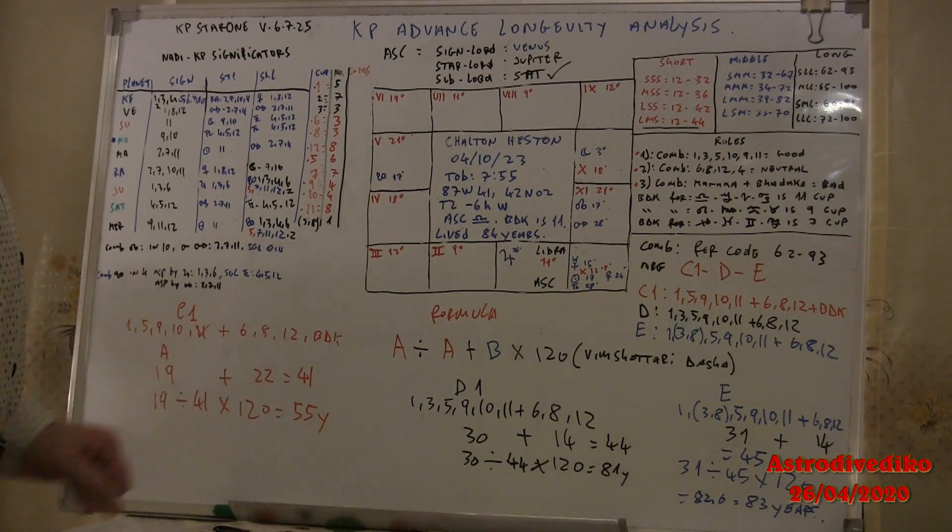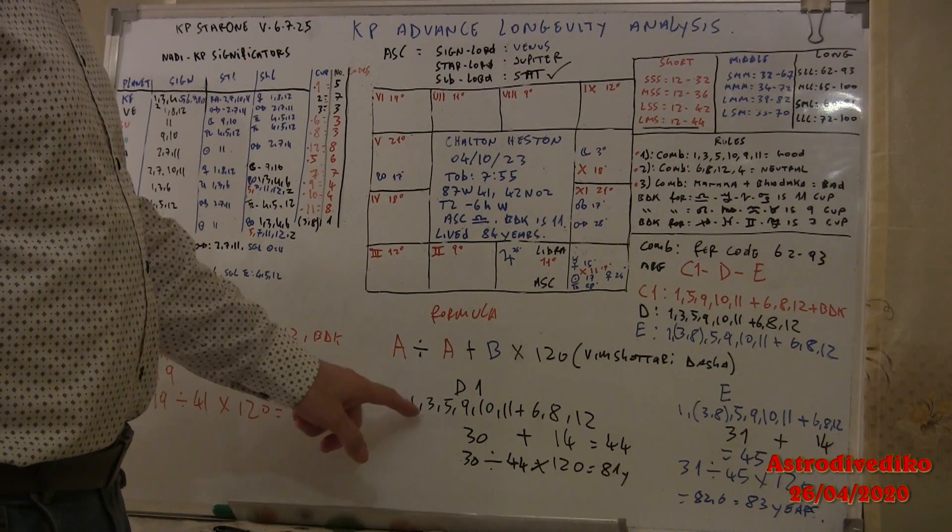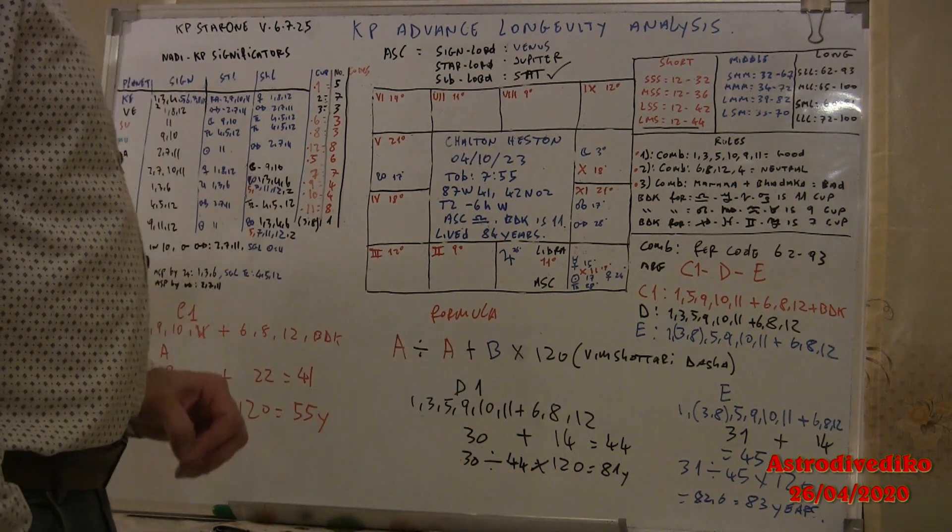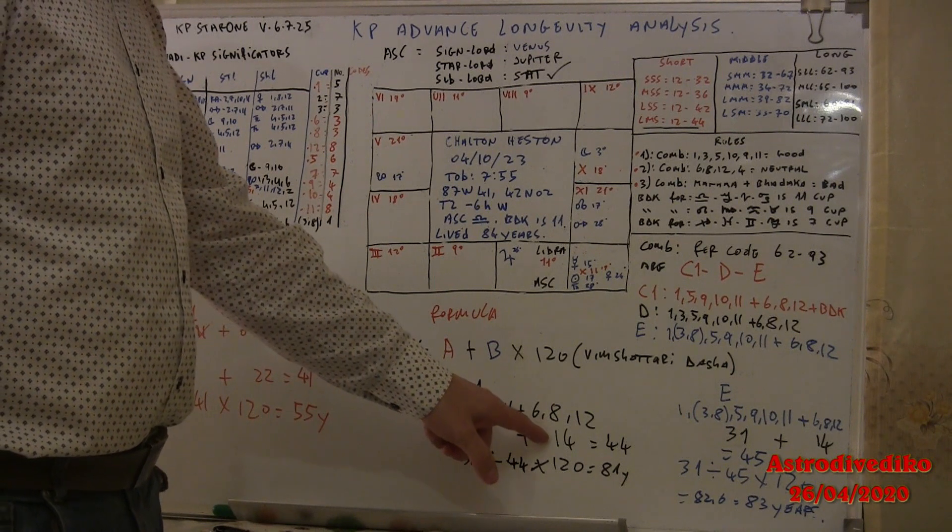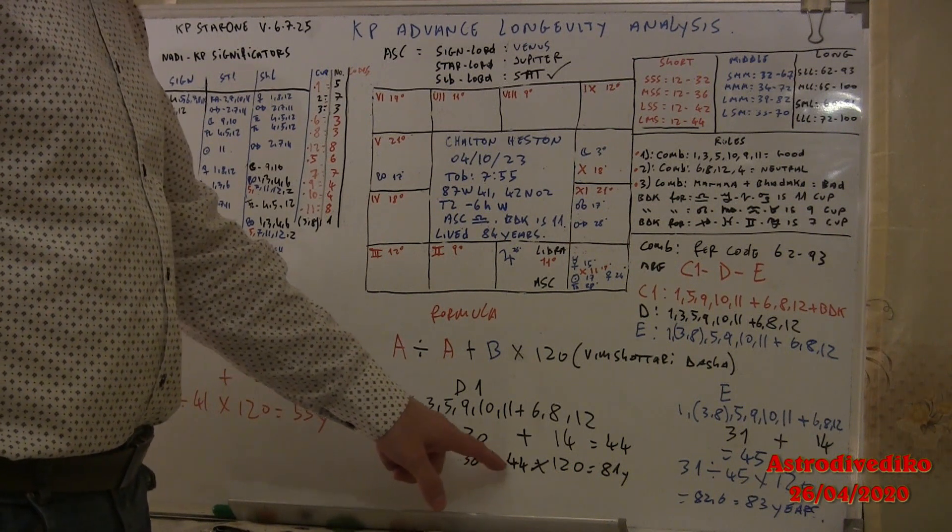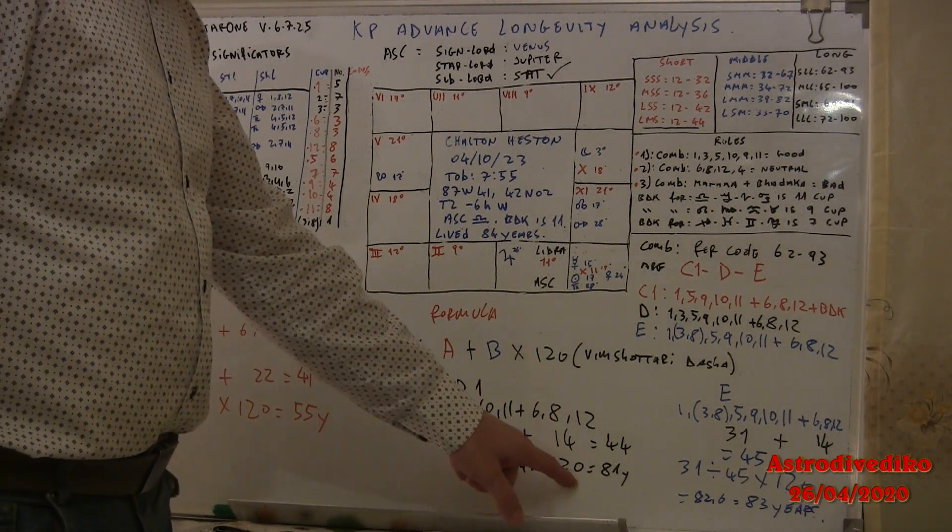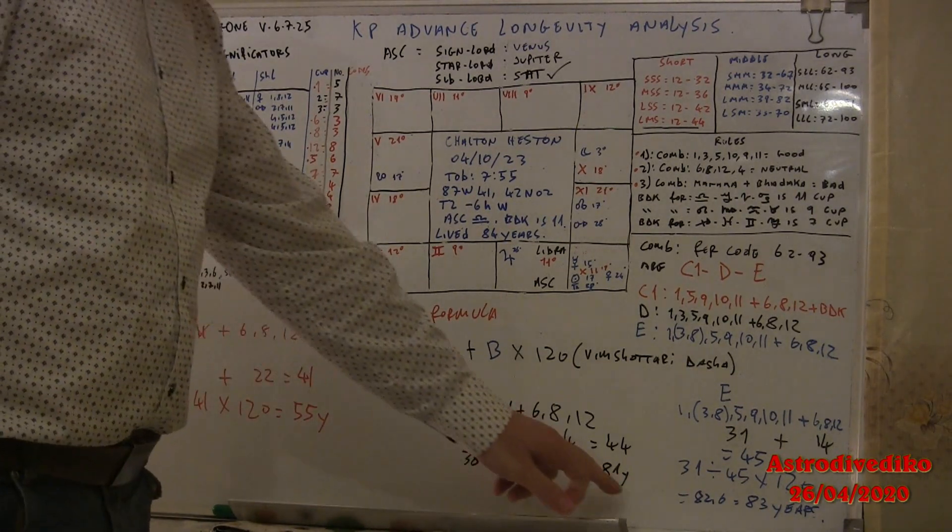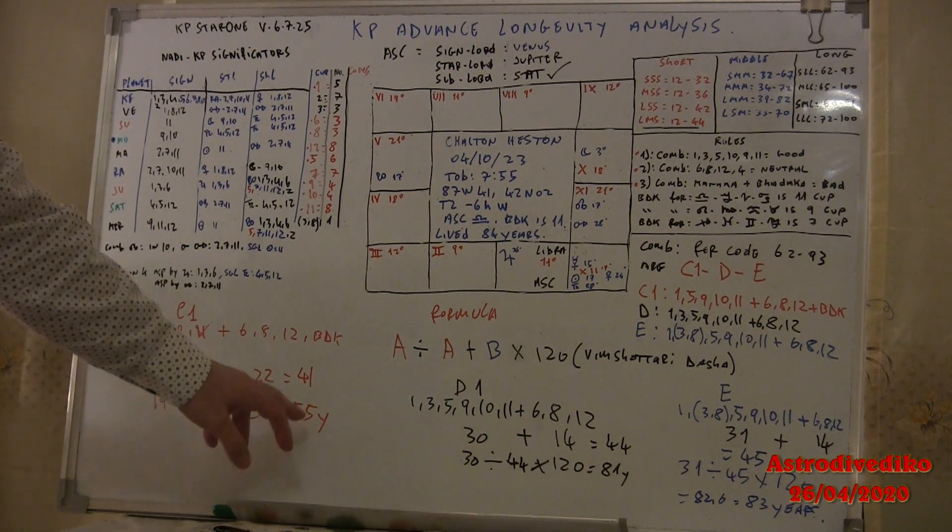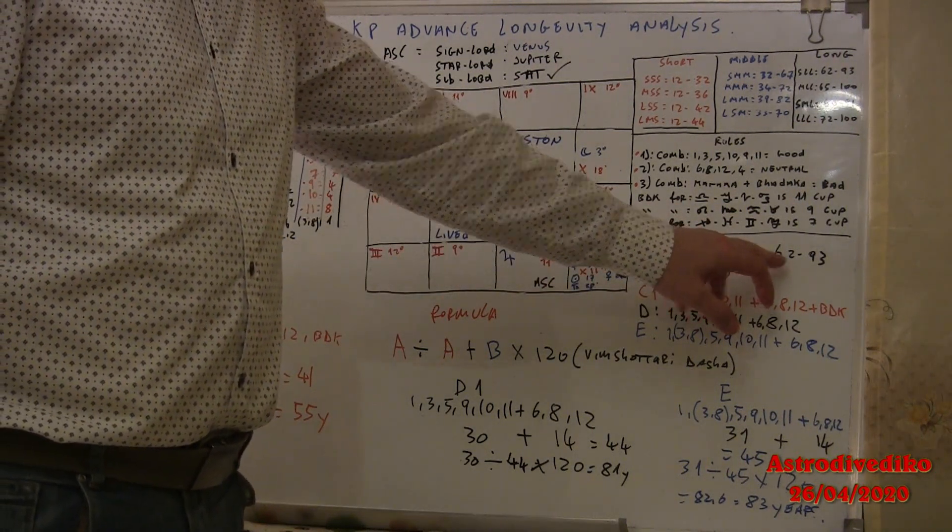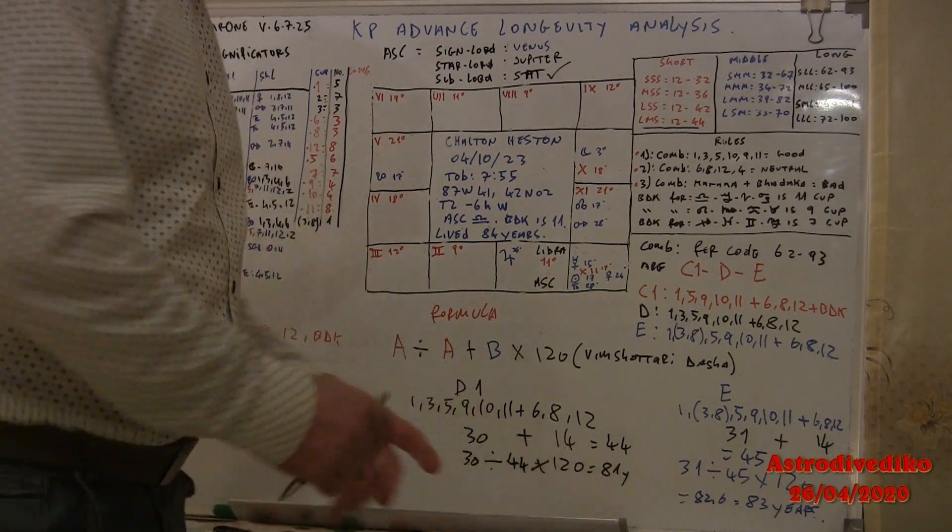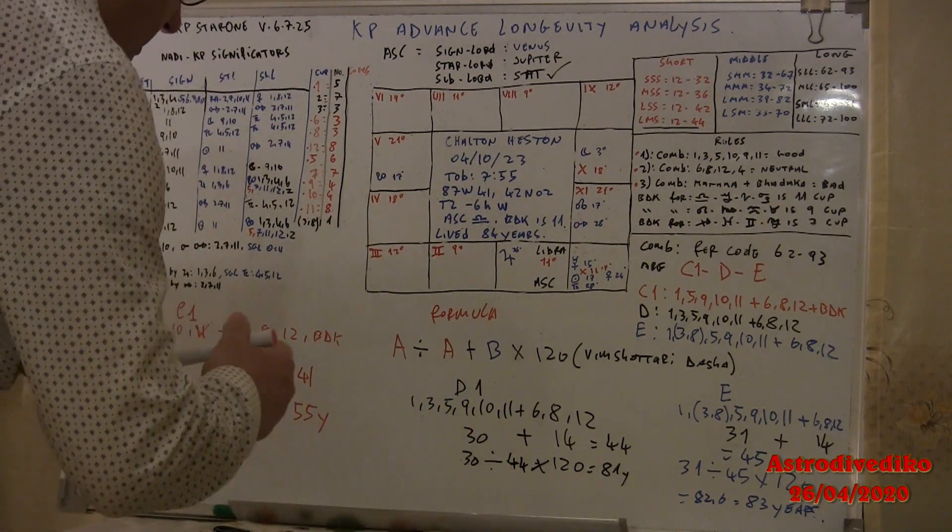So 55 is the first combination. The second combination is D1. D1 is 1, 3, 5, 9, 10, 11 good houses plus 6, 8, 12 bad houses. Good houses were 30 and the bad houses is 14. 30 plus 14 is 44. 30 divided by 44 multiplied by 120, we get 81. So C1 showed 55 years, it is distant from the first block 62, so we reject it. We take 81.